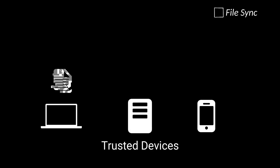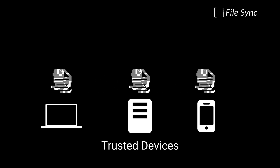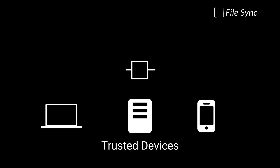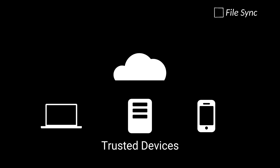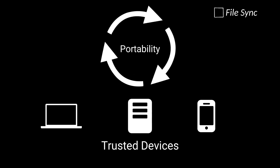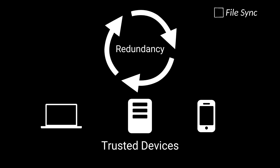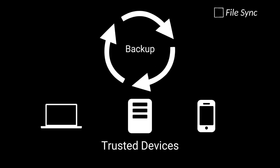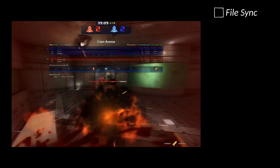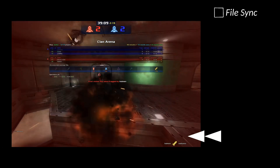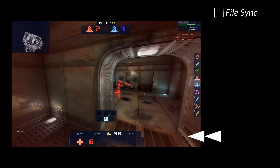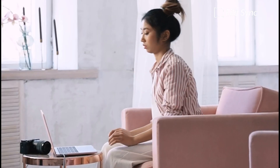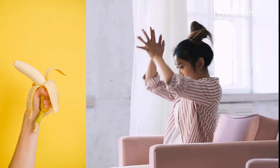A file sync service securely synchronizes files across trusted devices in real-time via the network or the internet, ensuring portability, redundancy, and backup. Downtime is minimized, and work can resume on any available device.